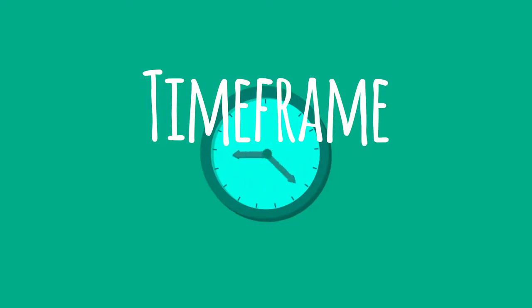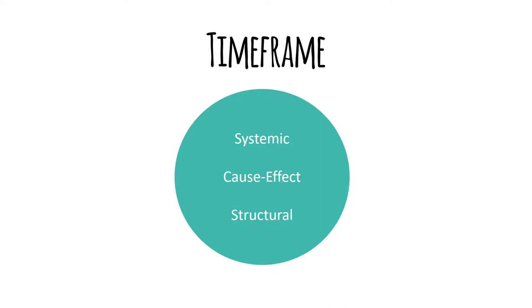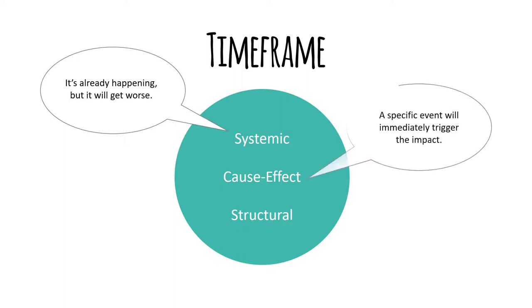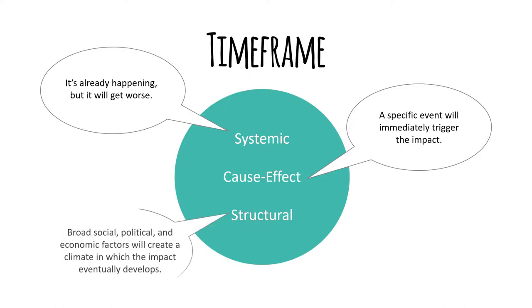Timeframe is the next method of impact calculus. This asks us to consider when the impact will happen and which debater's timeframe is more urgent. First, the timeframe might be related to systemic events — this type of impact is already happening; for instance, we already have people living in poverty in the United States, and the argument is that the plan will intensify it. Second, the timeframe might be cause-effect, where a specific event immediately triggers the impact — for example, when Texas passed a law requiring abortions be performed in state-of-the-art surgical centers, most small clinics immediately closed. Finally, the timeframe may be structural, where broader factors create a climate in which the impact develops — for instance, economic decline may eventually lead to resource wars.